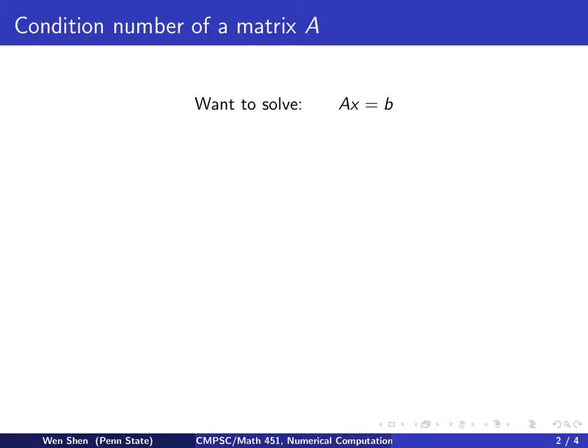We now talk about condition number of a matrix. This is in association with the stability of your solution. For the system that we want to solve, let's say we want to solve this problem, AX equals to B.